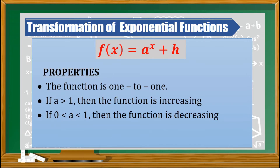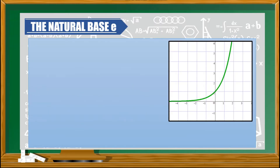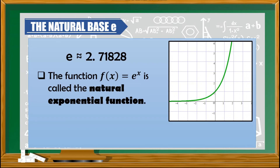Other properties: the function is one-to-one. If a is greater than 1, then the function is increasing. If a is between 0 and 1, then the function is decreasing. The natural base e — the irrational number e has an approximate value of 2.71828. If e is used as a base in an exponential function, it is called the natural exponential function.